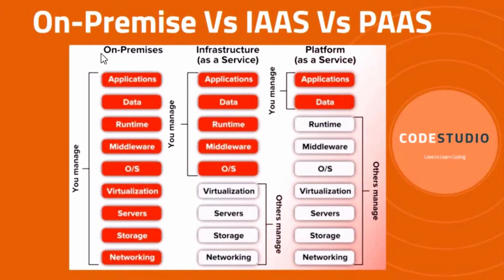In on-premises deployment, we have to install all the physical servers. The infrastructure such as servers, storage, and networks — all these physical resources have to be purchased and installed on-premises. Then we install the OS and all required resources to run our application and data. Everything is managed and maintained by our own IT staff. This option is preferred when there are security concerns — for example, banking applications where the bank maintains its own infrastructure.